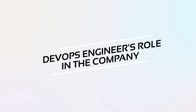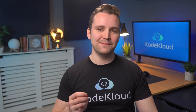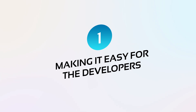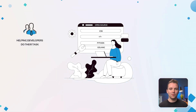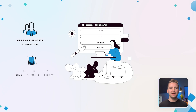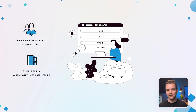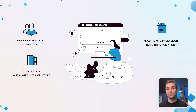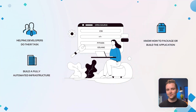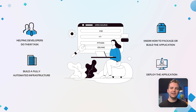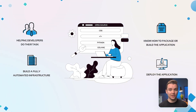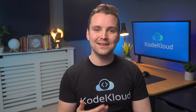Now let's talk about your role as a DevOps engineer. We can categorize this into three primary groups in no particular order. The first one is making it easy for the developers. If the goal is to push out quality software fast, then helping developers do their task is a contribution to that goal. In this regard, we want to build an infrastructure that is fully automated — you need to know how to package or build the application and make it an automated process, and finally deploy the application so it can be used by end users. The idea is to allow developers to focus on pushing code and let the infrastructure take care of the rest. The automation pipelines should ensure that only good and tested code makes it into deployment.